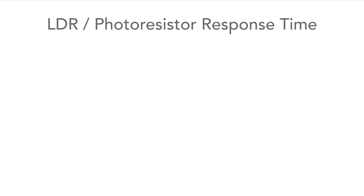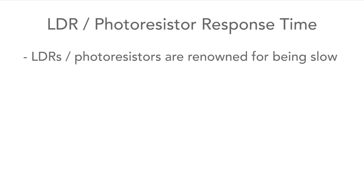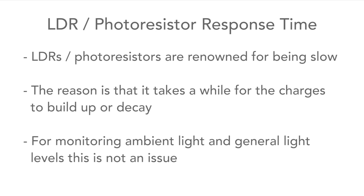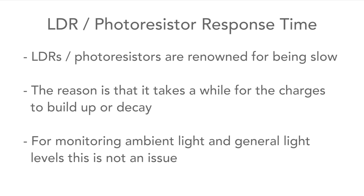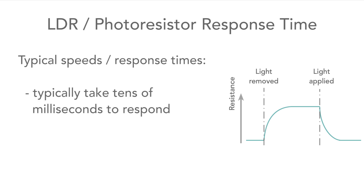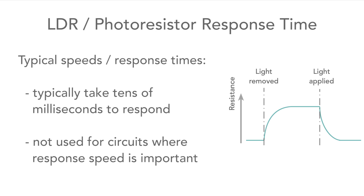An important aspect of LDR performance is the time it takes to respond — they are known for being rather slow. This occurs because it takes a little while for the charges to build up or decay within the materials. For many circuits where they're used to monitor slowly changing light levels, this isn't an issue. Typically, a photoresistor responds within a few tens of milliseconds, so they're not used as receivers for fast optical data links or other circuits where speed is important.